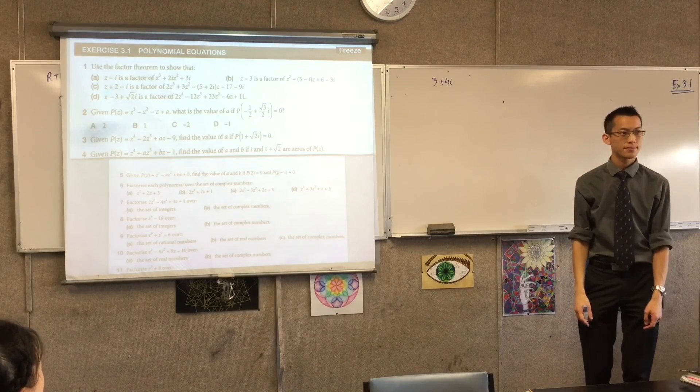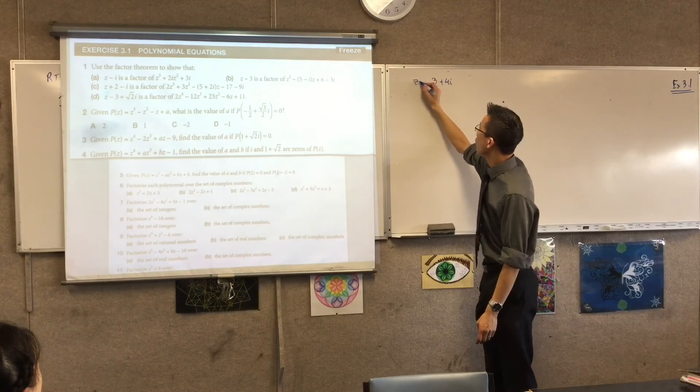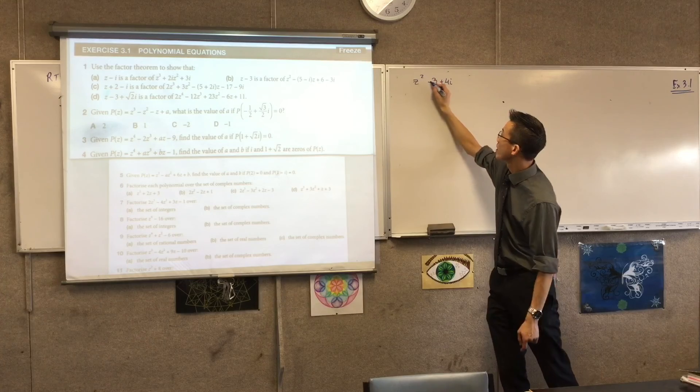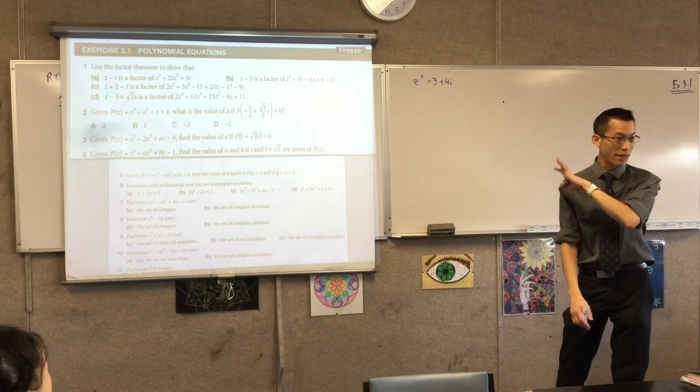What's the polynomial? Z squared, yeah, good. I want some number, some complex number, such that when I square it, I end up with this. Yeah, does that make sense? Okay. And once I solve that, I'll be fine.